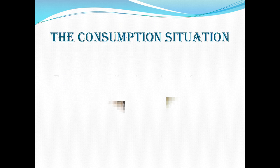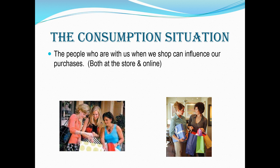The first one is the situation. The consumption situation really includes those people who may be physically with us when we are shopping, when we are considering to make a purchase. This could be at Walmart, Best Buy, the shopping mall, and even online. Studies find that the people around us when we're shopping online via the internet or through our smartphone can have an influence as well — they can influence us into buying things or not buying things.